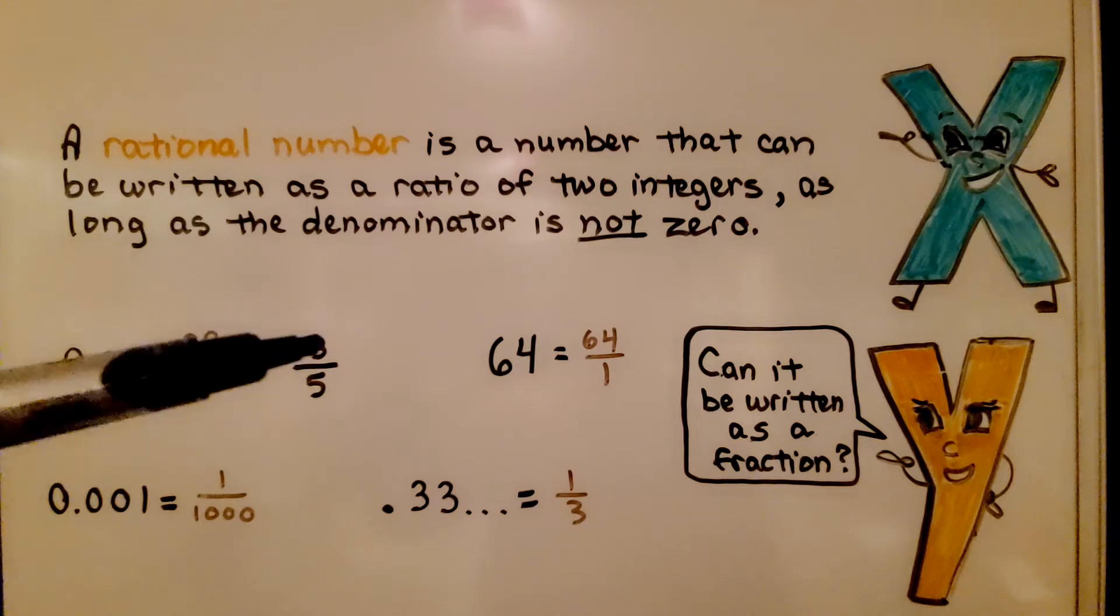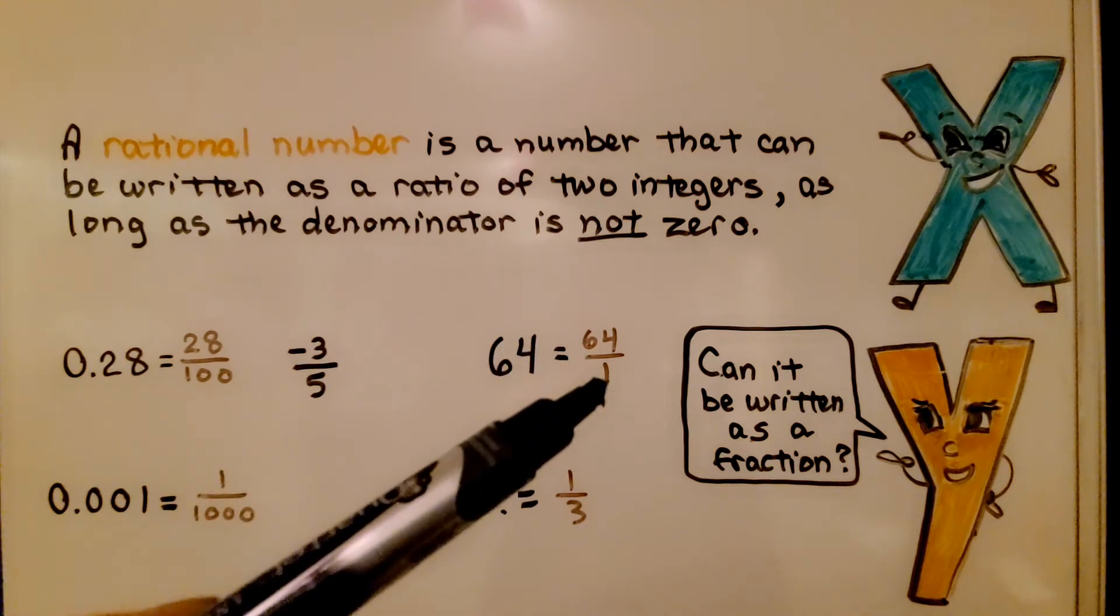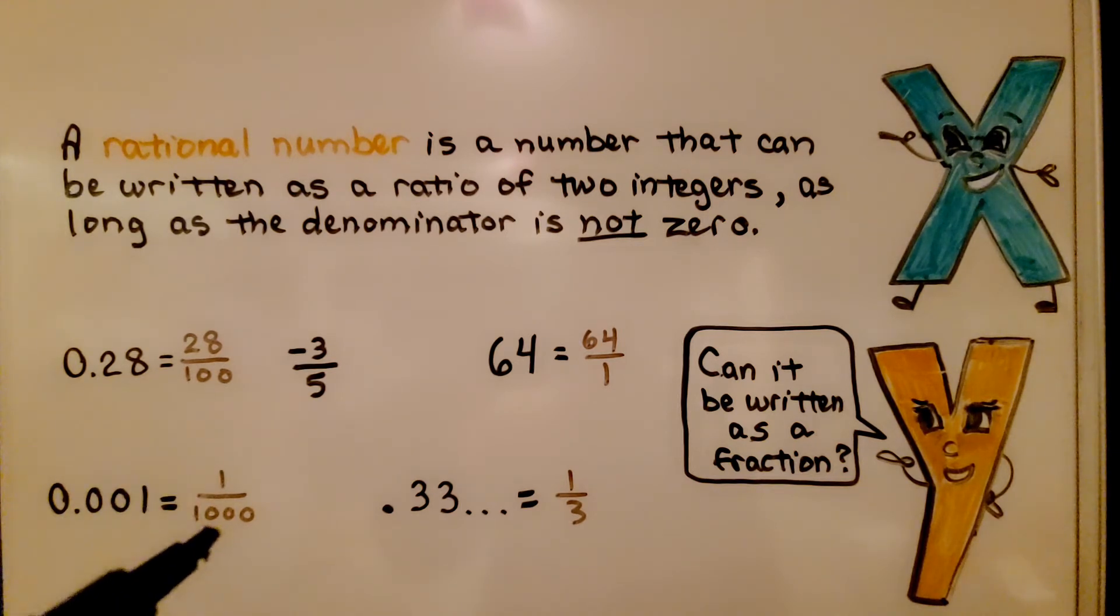Negative 3/5, well that's already written as a ratio. 64, the whole number can be written with a denominator 1. Here we have 1 thousandth. We can write a 1 over a thousand.